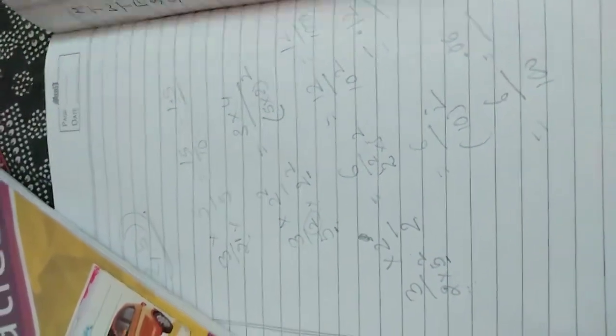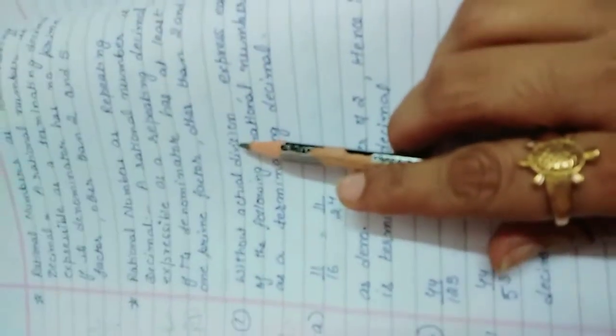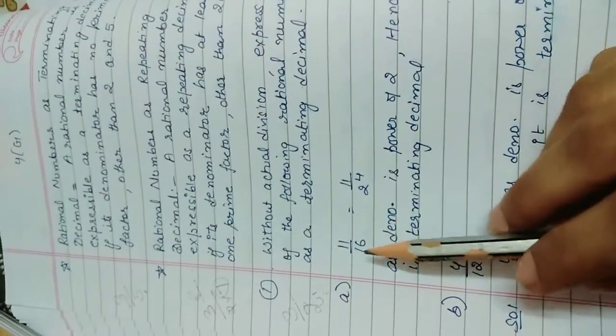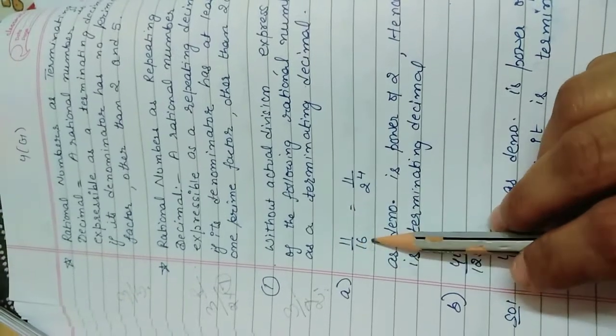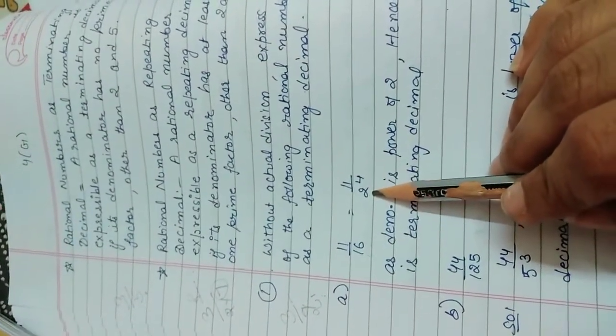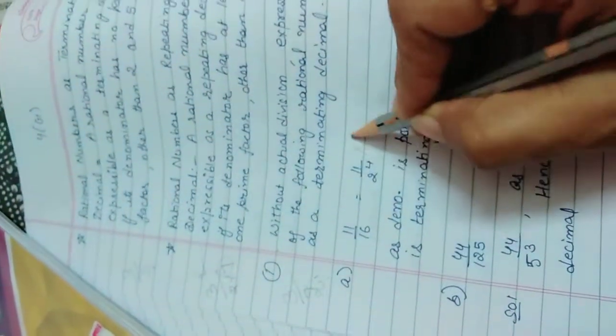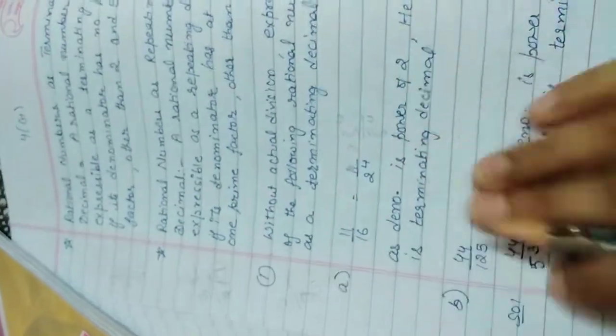Here he said that only without actual division. You don't have to do any division and tell whether it terminates or not. So you have to see only your denominator. Denominator is in the form of power of 2. So basically if we try, we have to multiply it with 5 raise power of 4.